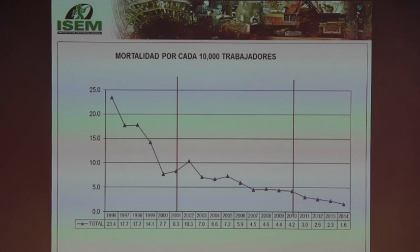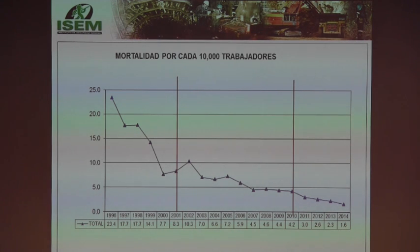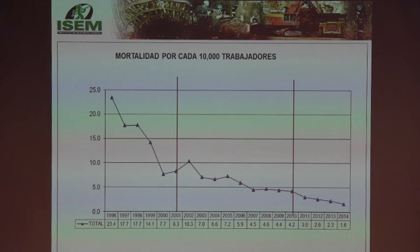We cannot give all the credit to the law. In some countries, people think the law will solve everything, but the law is only part of the solution. The state has a role in legislating, supervising, and controlling. Companies have a prevention role and workers also have their role. Thanks to all these actors — workers, employers, safety professionals, and the state — we have managed to reduce accident figures. We must keep working until this curve reaches zero.